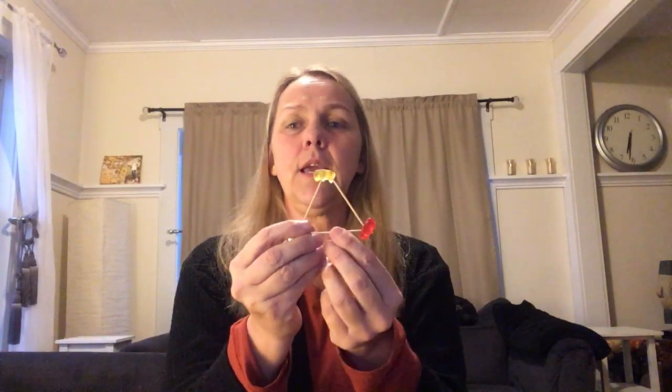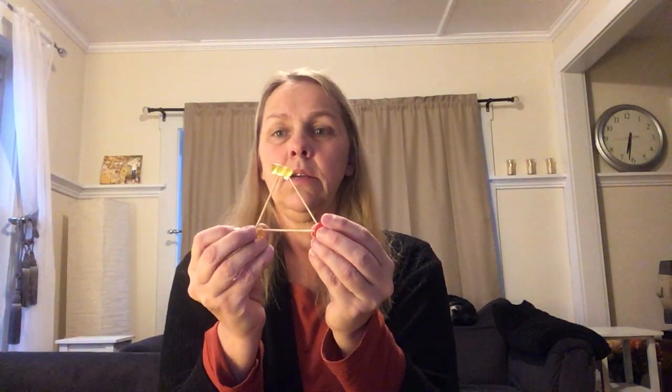And look at my triangle. So any kind of sticky candy would work. Okay, and I just took the toothpick and pushed it right into the gummy bear. The gummy bears are my vertices or my corners, and my toothpicks are my sides. And again, you could use Play-Doh and make little balls and that would connect them. You could do mini marshmallows. That'd be fun.